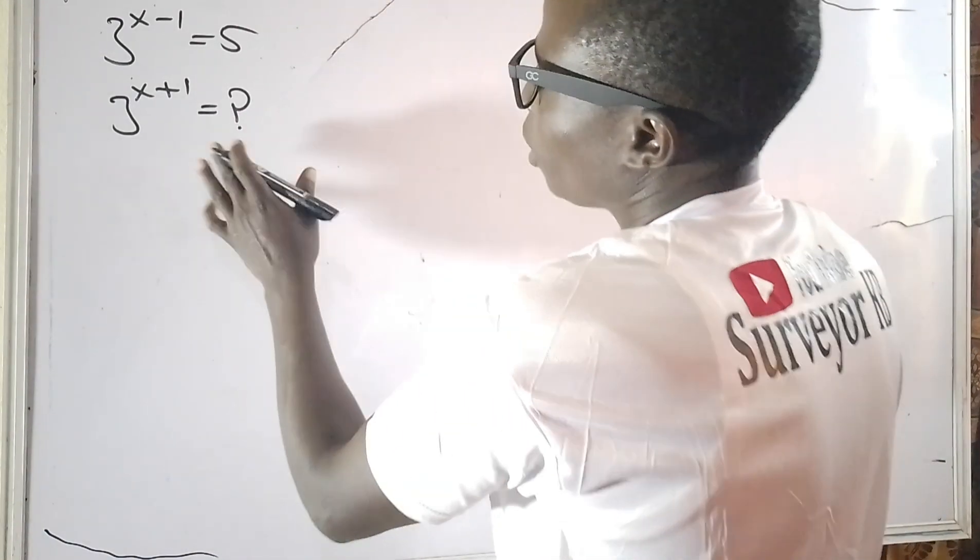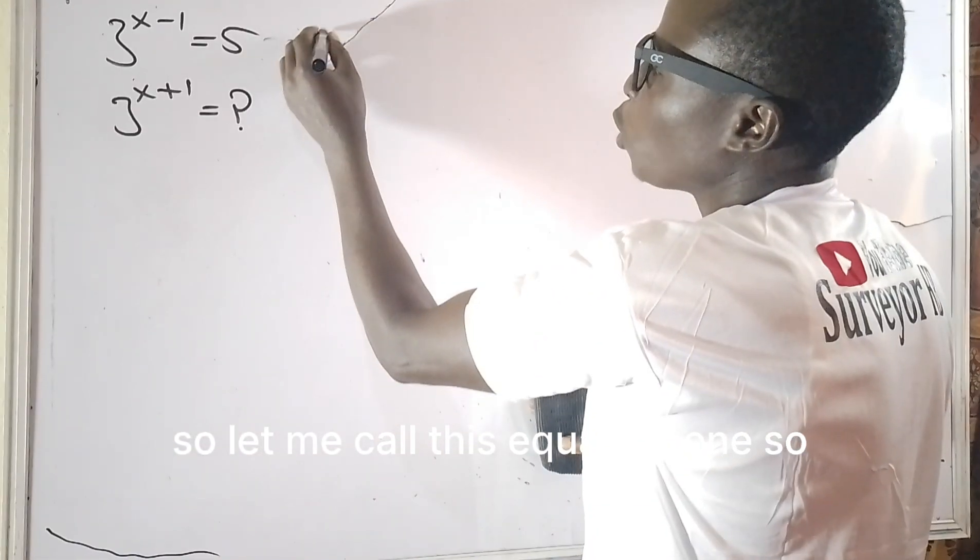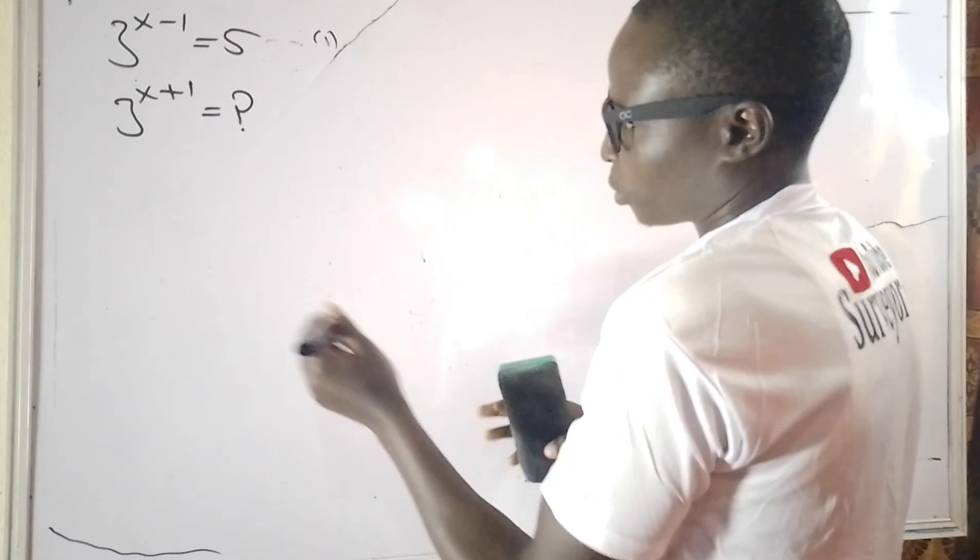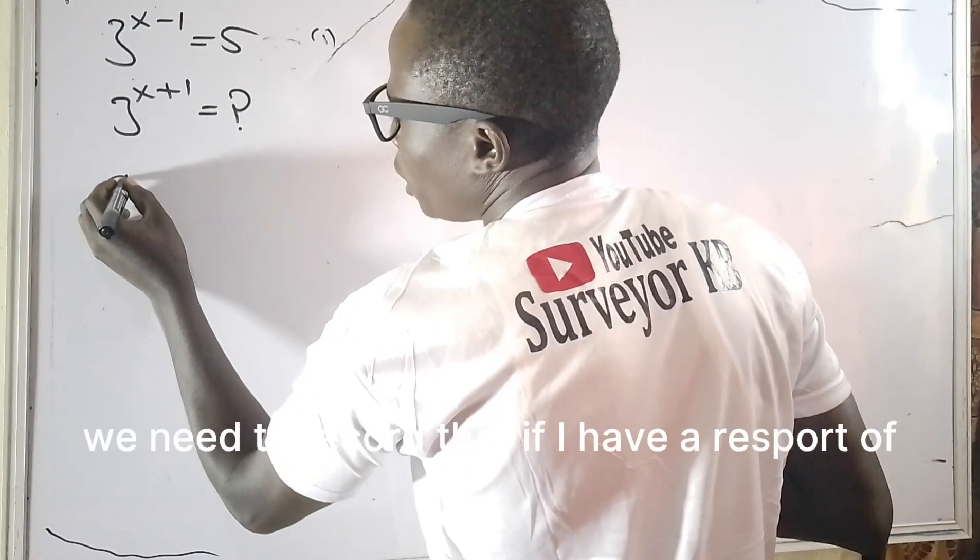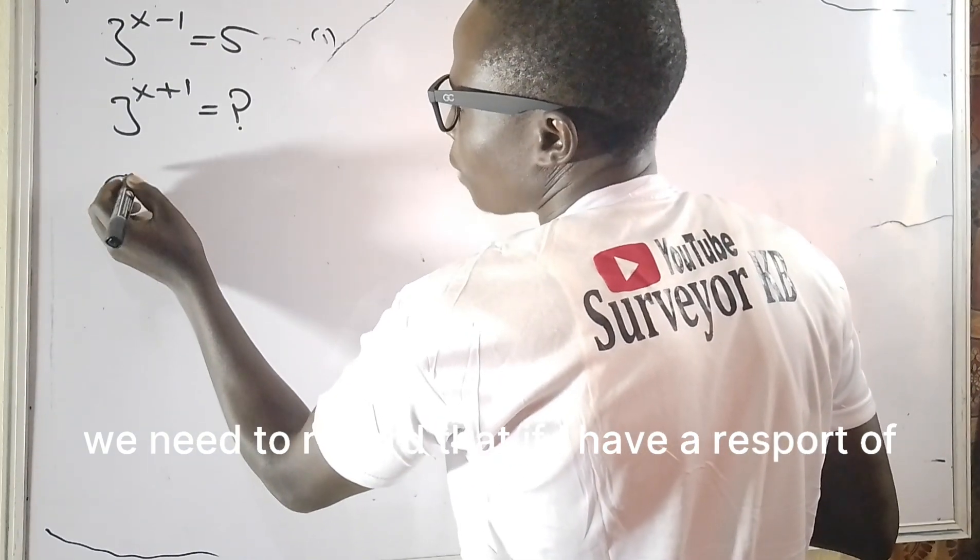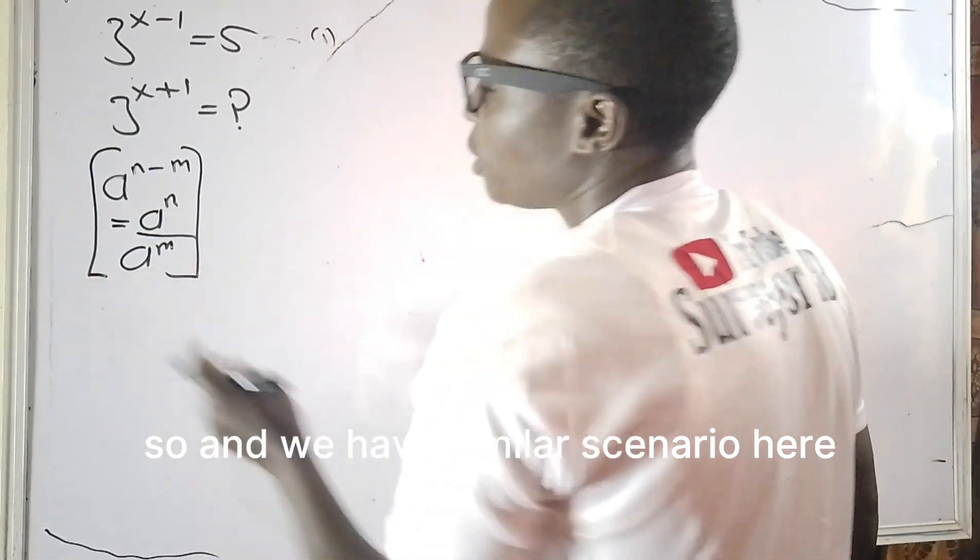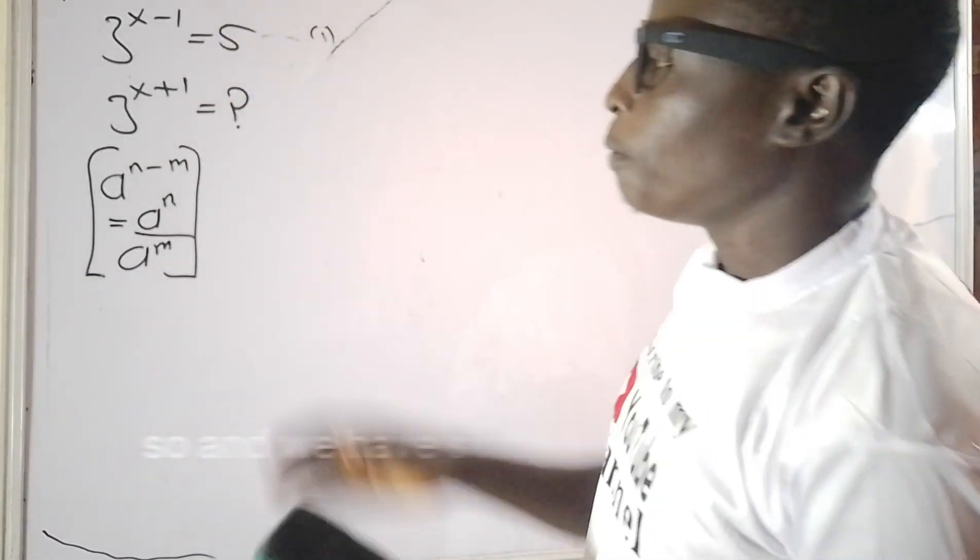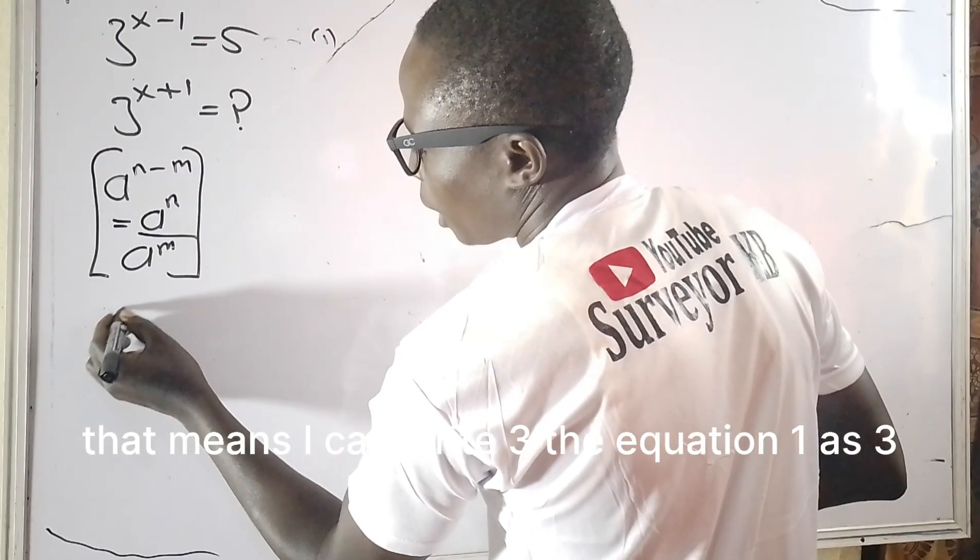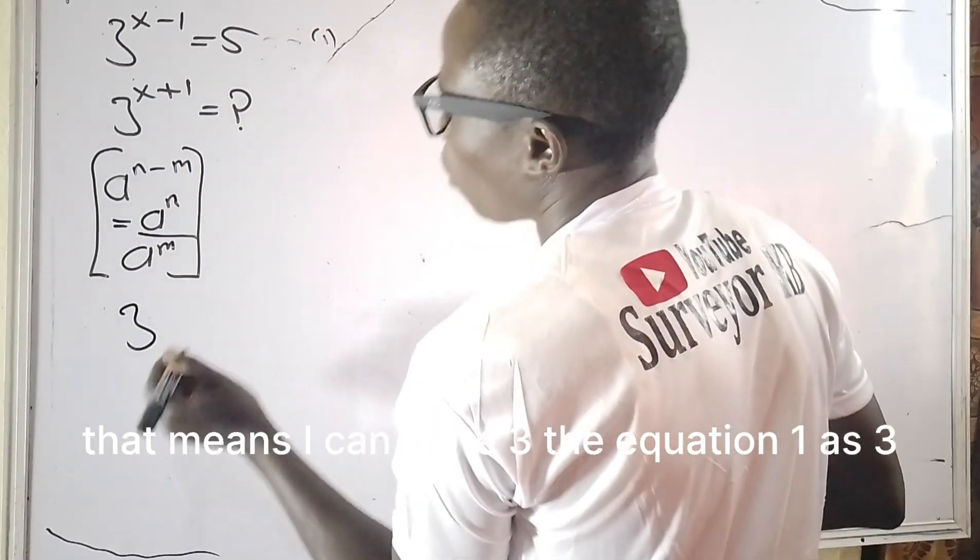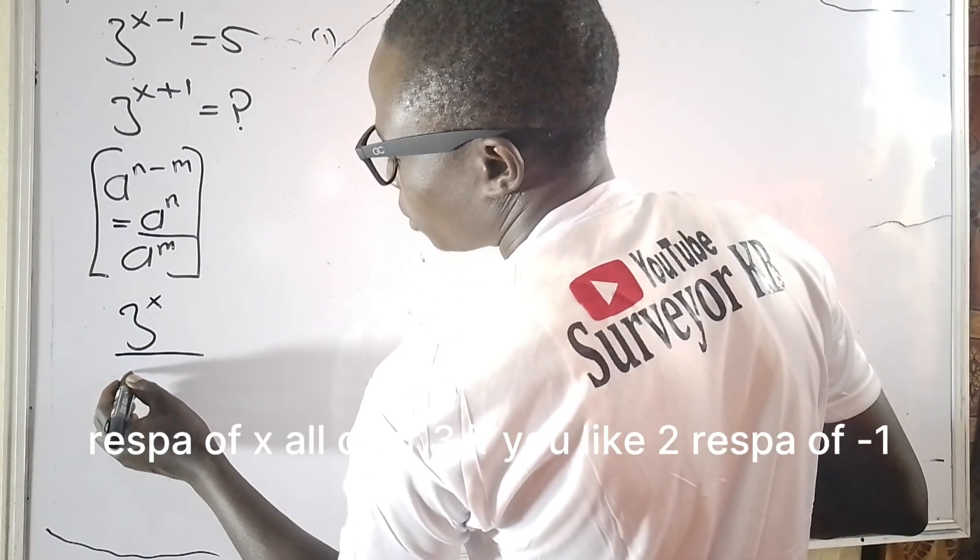So 3 raised power of x minus 1 is equal to 5. Let me call this equation 1. Now we need to recall that if I have a raised power of x minus 1 is equal to 6, we have a similar scenario here. So we can adopt this particular rule. That means I can write equation 1 as 3 raised power of x all over 3.